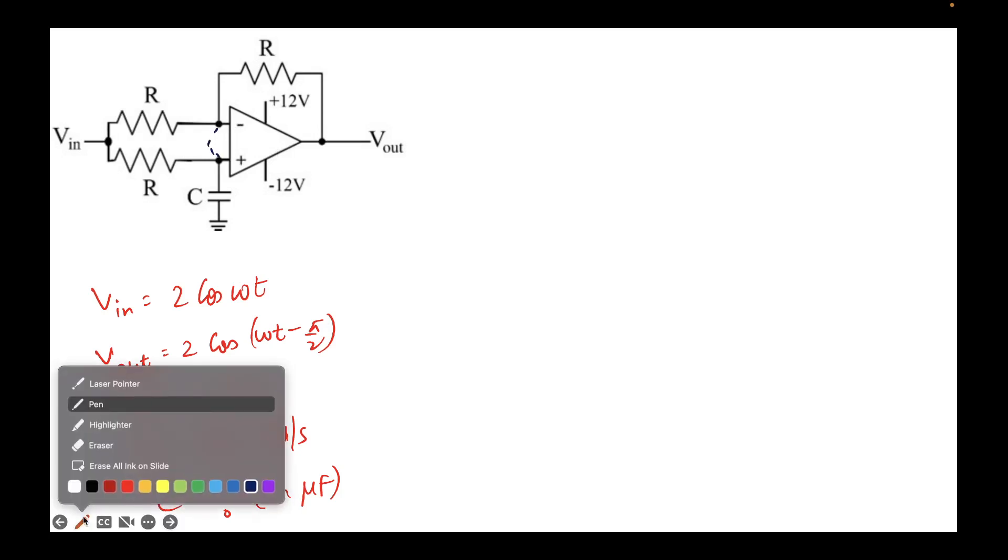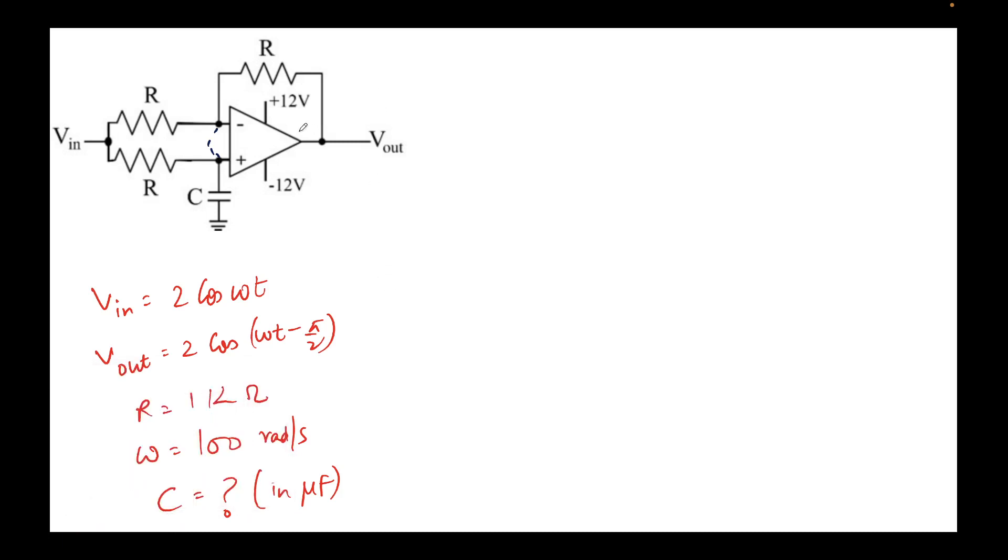I have just redrawn the circuit and written some values here which were given. Rather than writing 100t over and over, I just replaced it with the variable omega, which is 100 radians per second. Now let's assume that the voltage here is V_x. So naturally, voltage here will also be V_x.